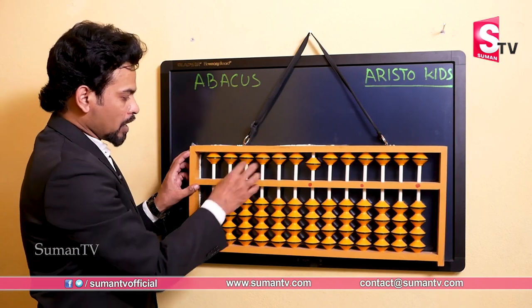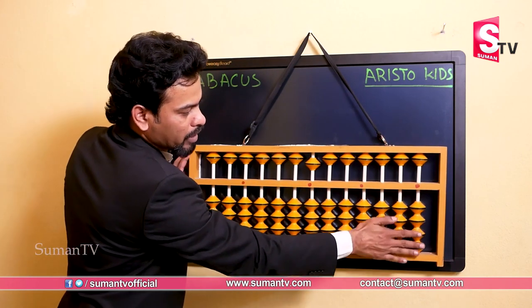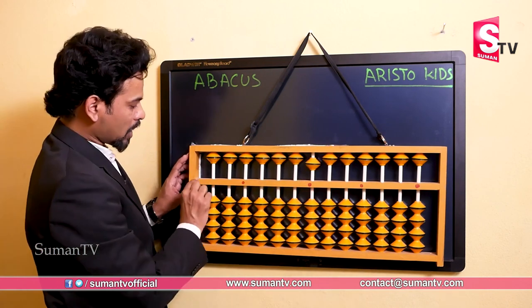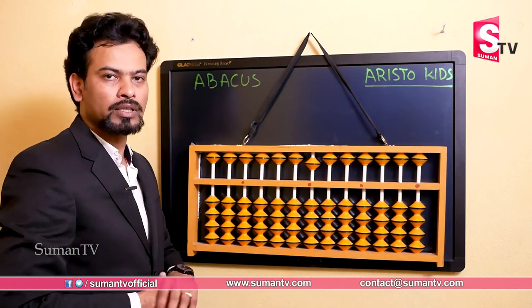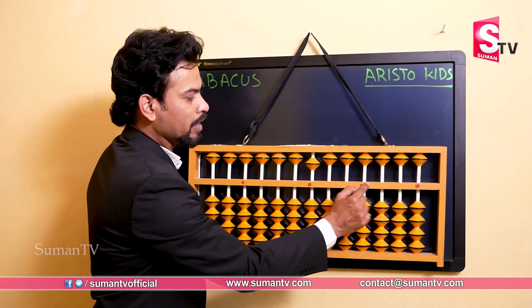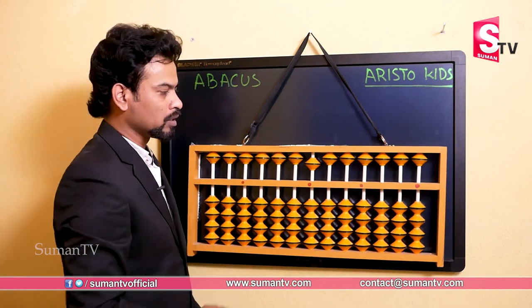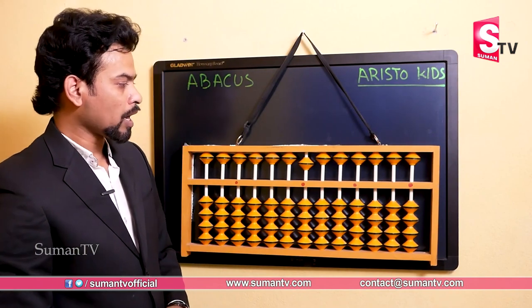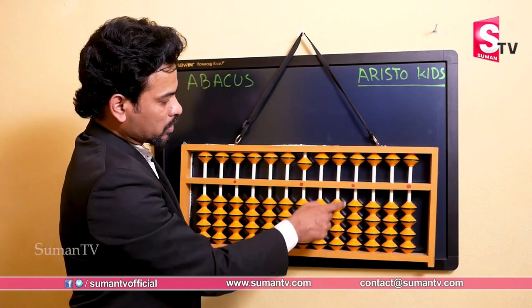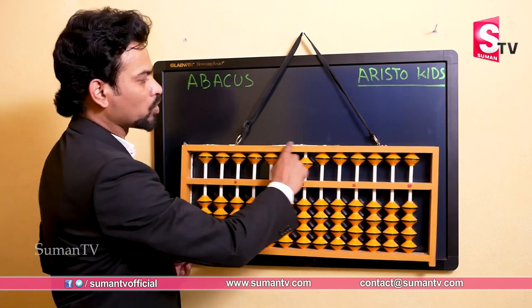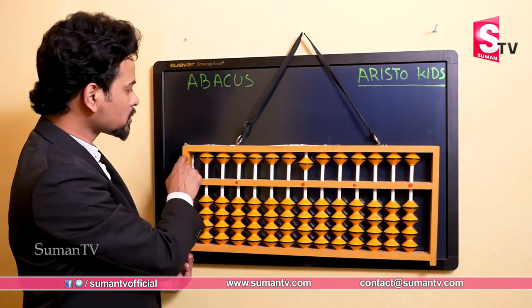You can find a bar in between the lower beads and upper beads which separates them into two different parts. This particular bar is called the beam or reckoning bar. In this beam you can find some black or red color dots — these are called unit dots. You can also find some white color rods which hold these beads. These are called rods, and the outer part of the abacus is called the frame.